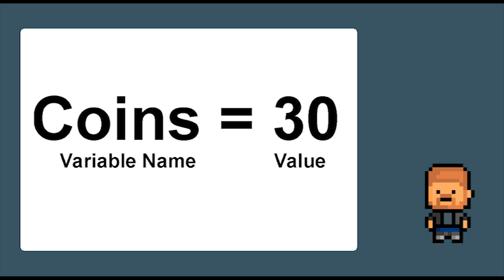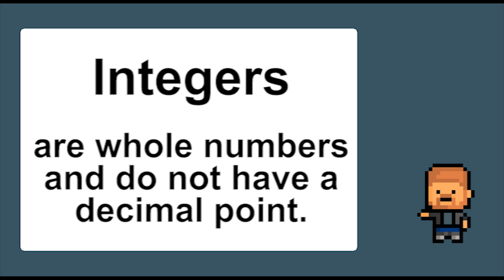Another example would be if you had collected 30 coins — the variable could be called 'coins' and the value would be 30. These would both be examples of integer variables because the values stored are whole numbers. And of course there are several different types of variables, so let's look at those.